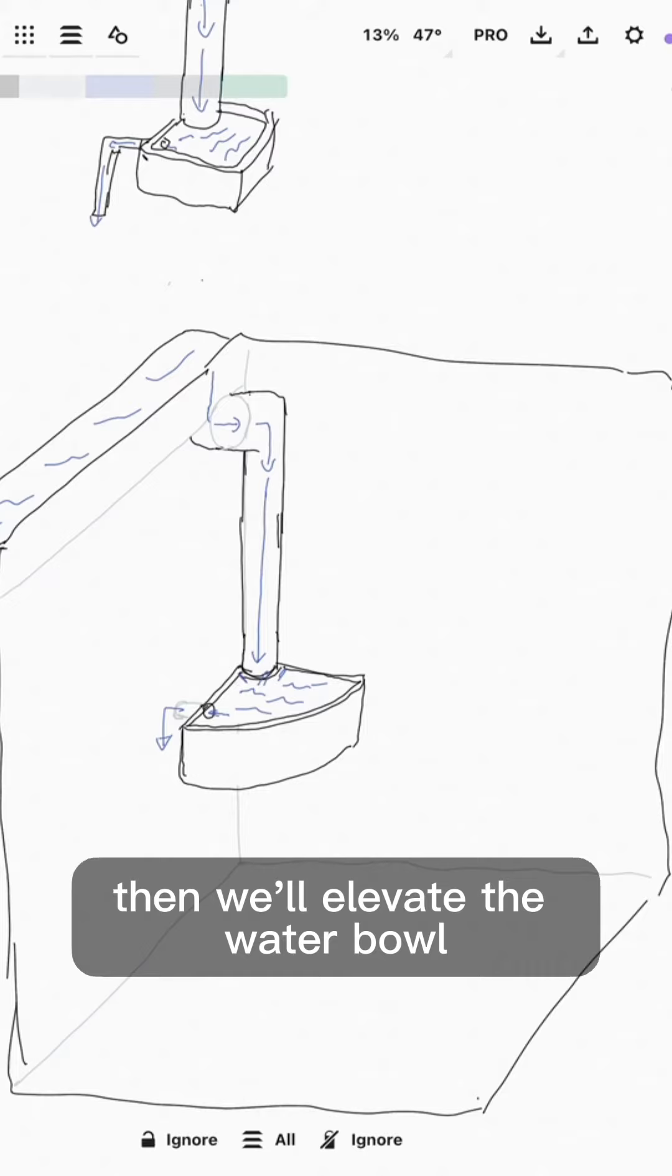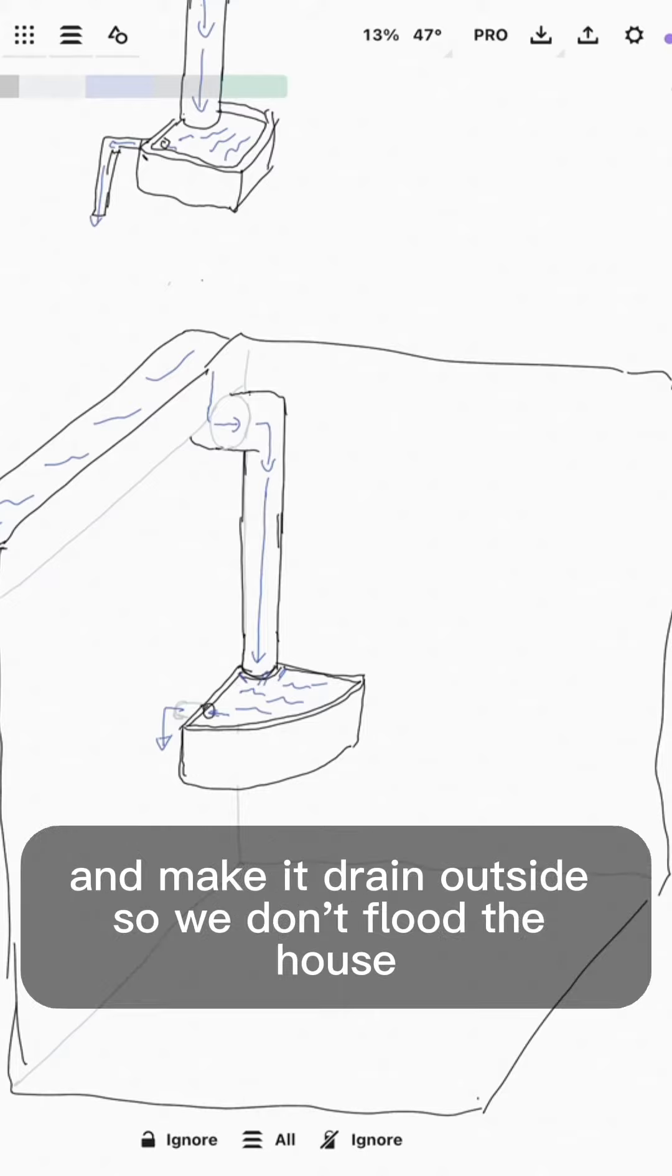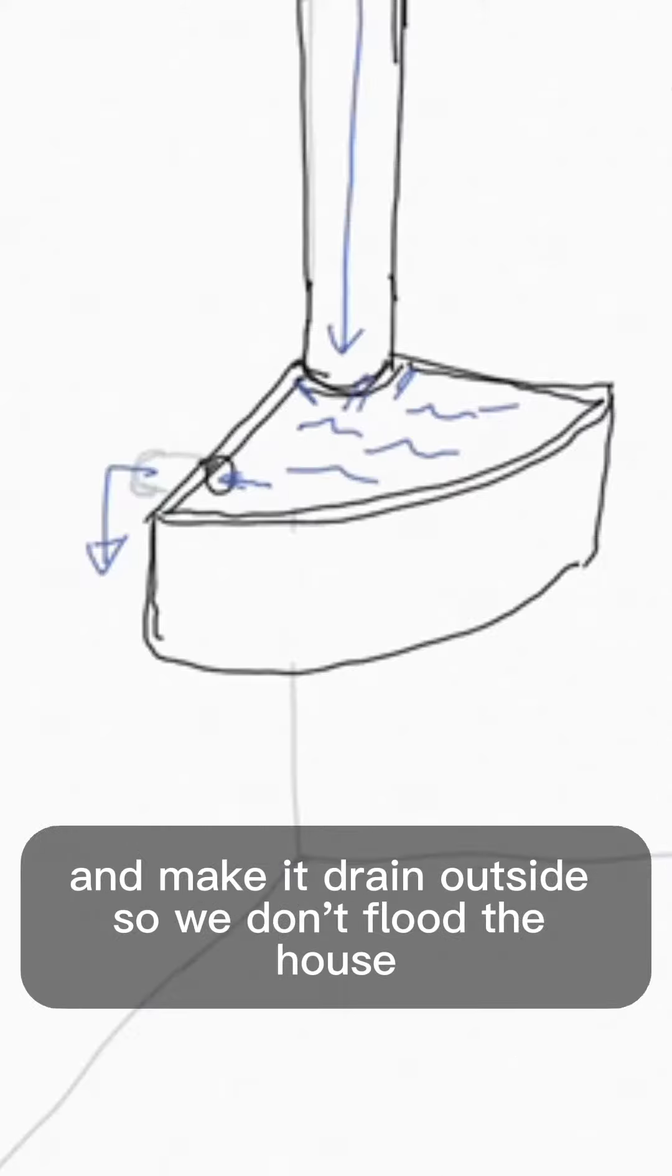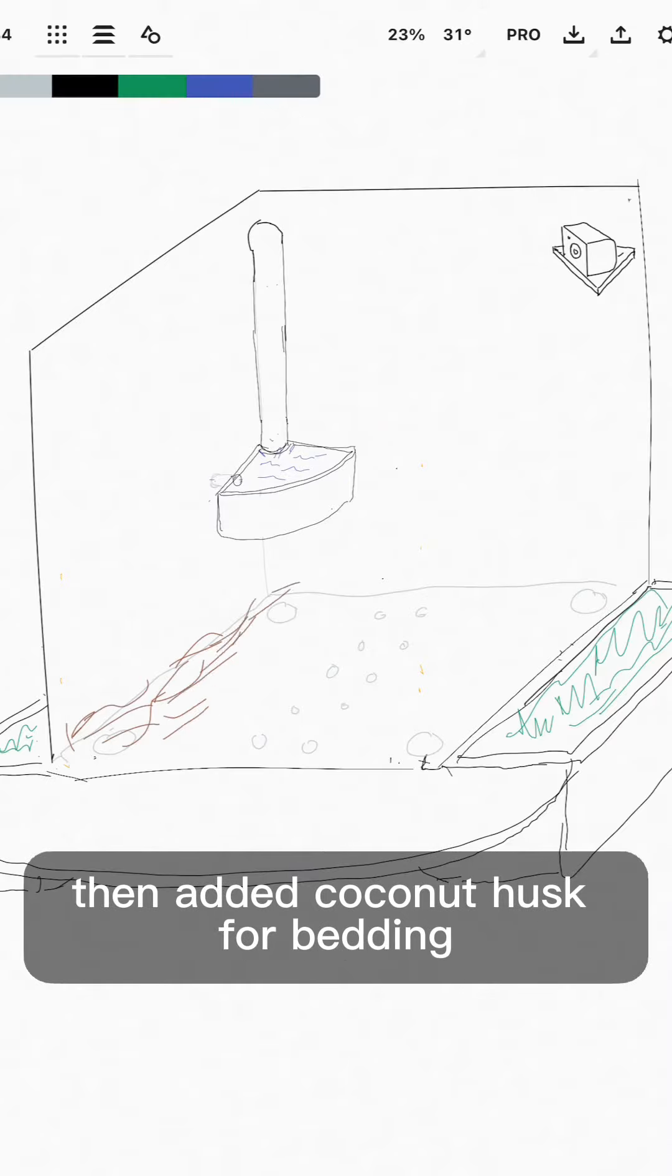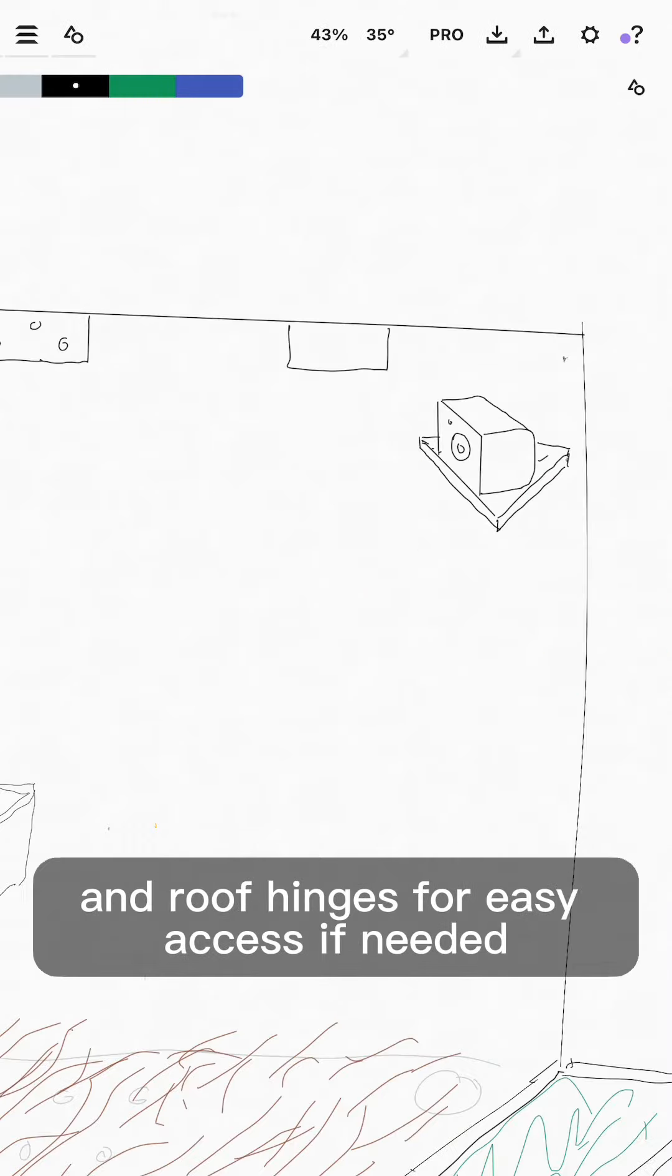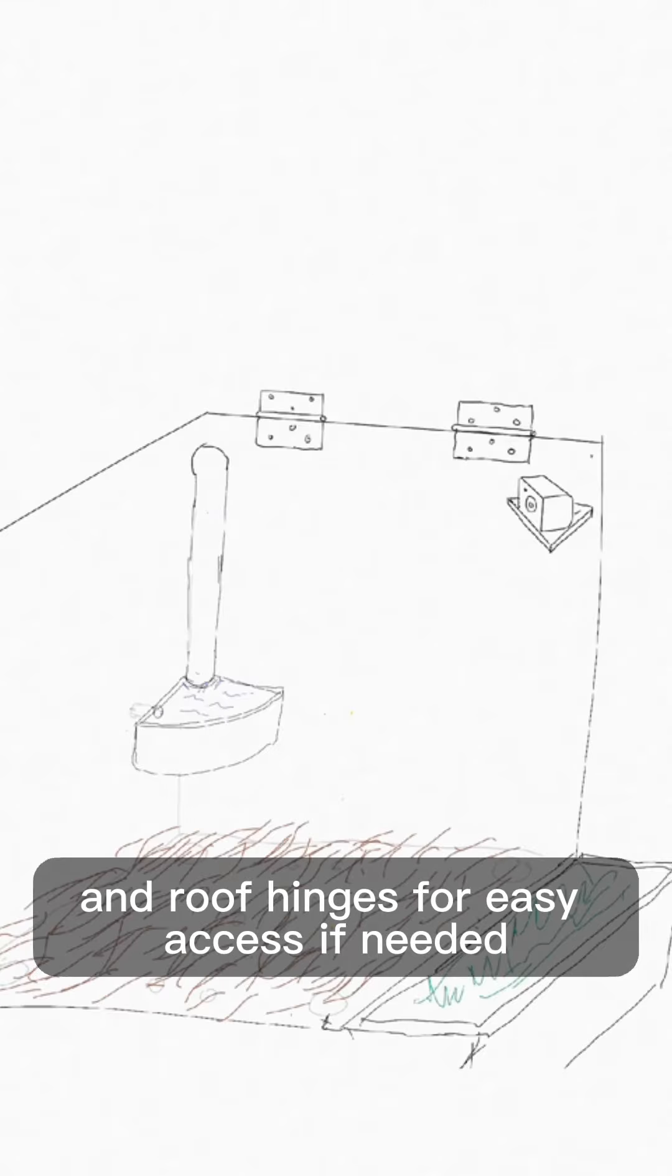Then we'll elevate the water bowl to save sleeping space and make it drain outside so we don't flood the house. Added coconut husk for bedding and roof hinges for easy access if needed.